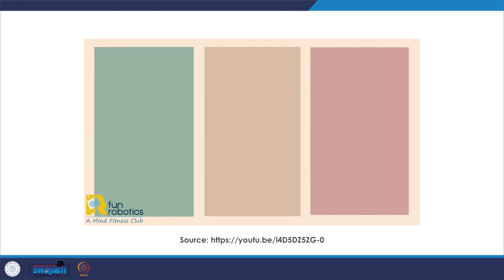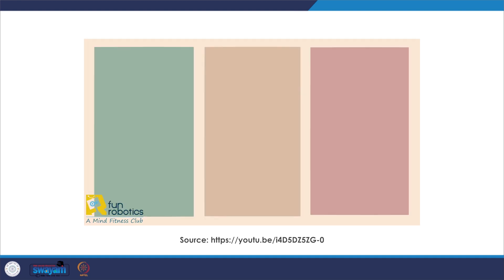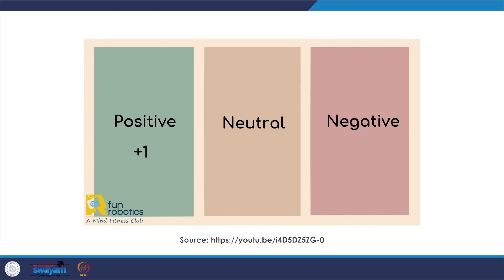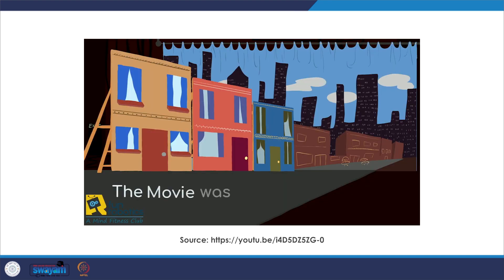Let's take a look at one simple approach of performing sentiment analysis. In a computer's perspective, emotions are split into three categories: positive, neutral, and negative, with the corresponding scores of plus one, zero, and negative one respectively. The keywords of each sentence would be categorized into one of the three categories, and then the summation of the final score will determine if the sentence is overall positive, neutral, or negative.